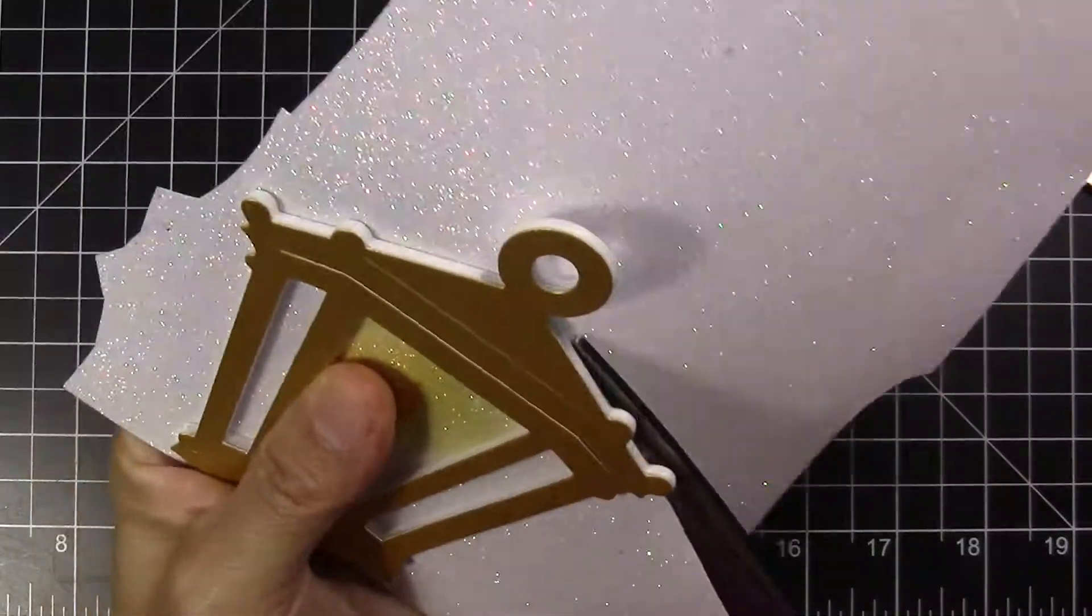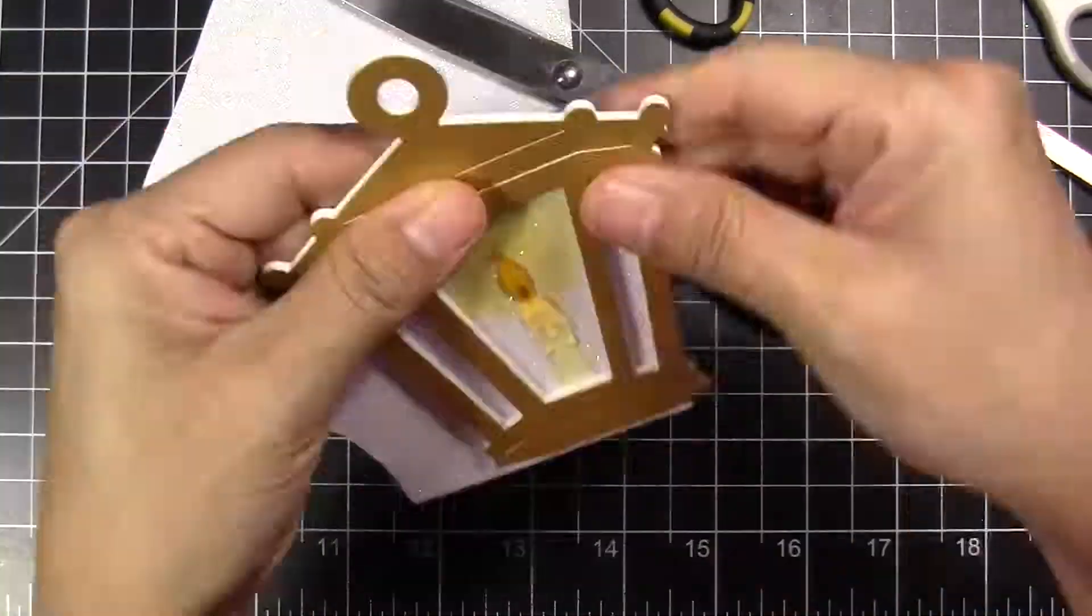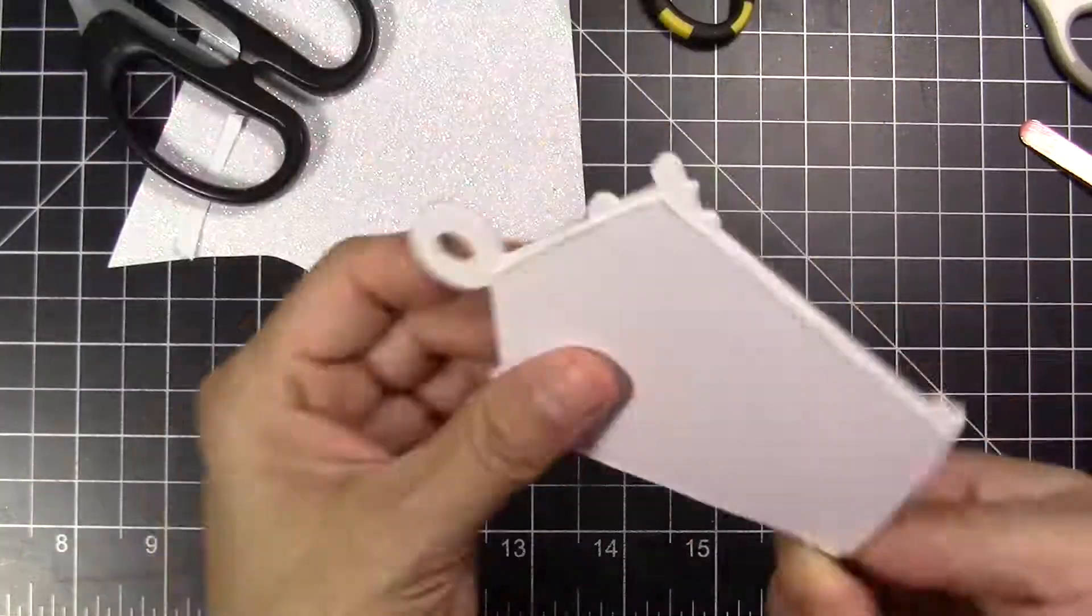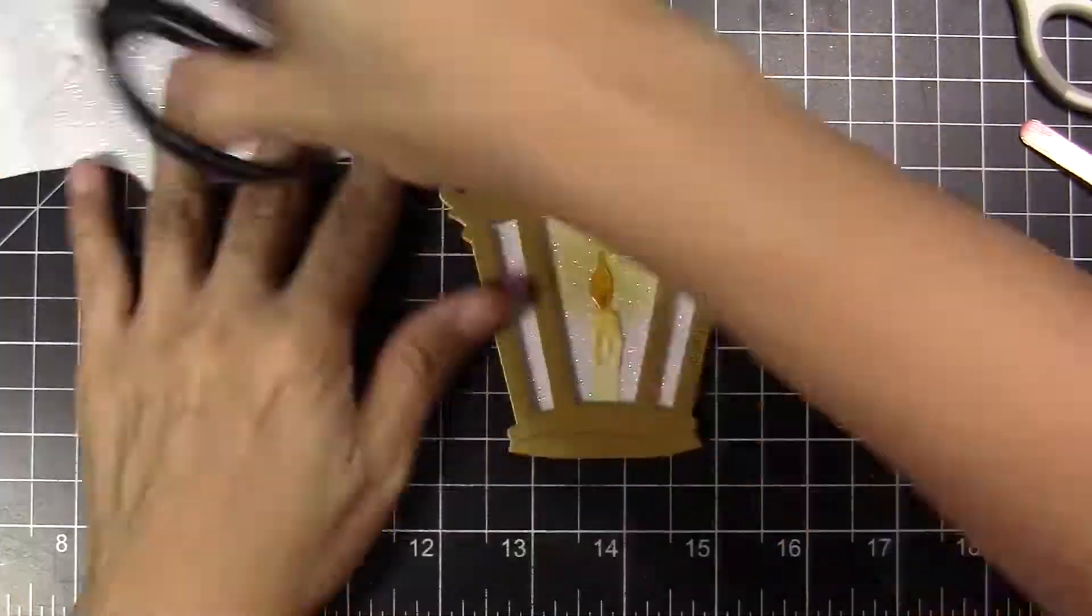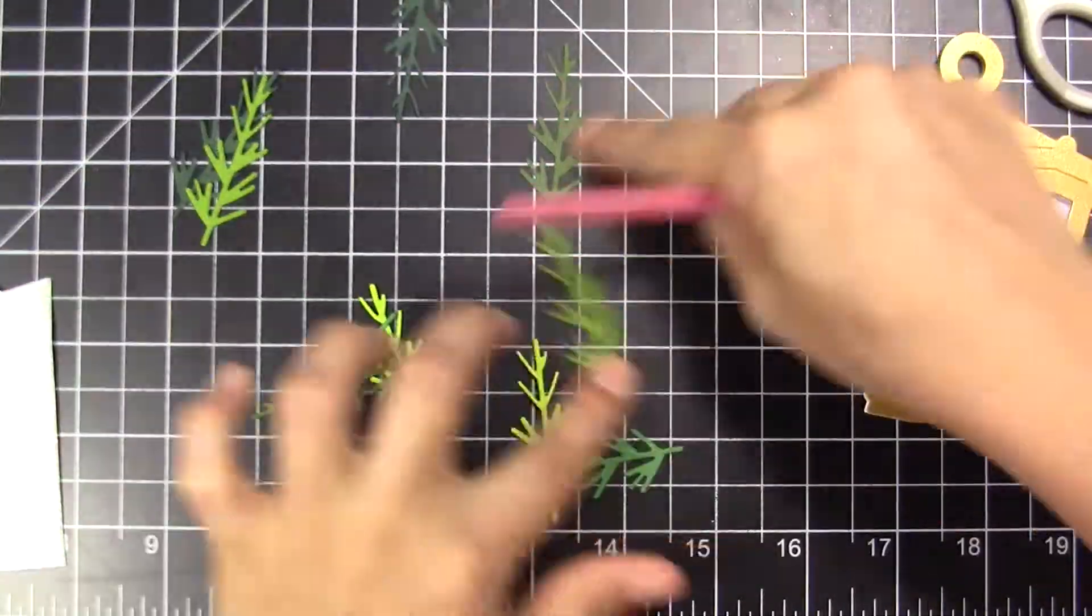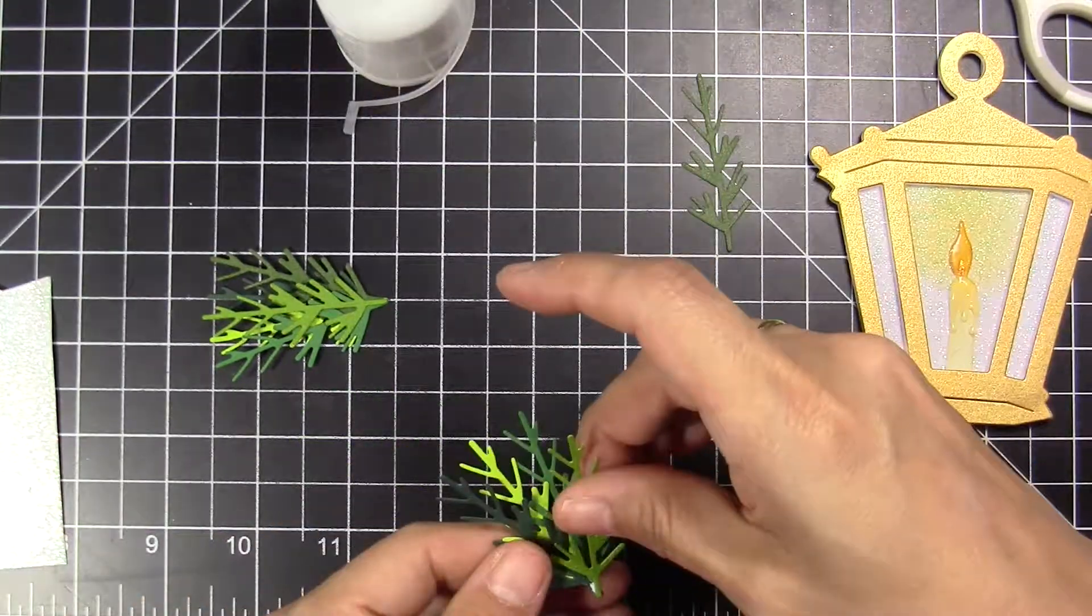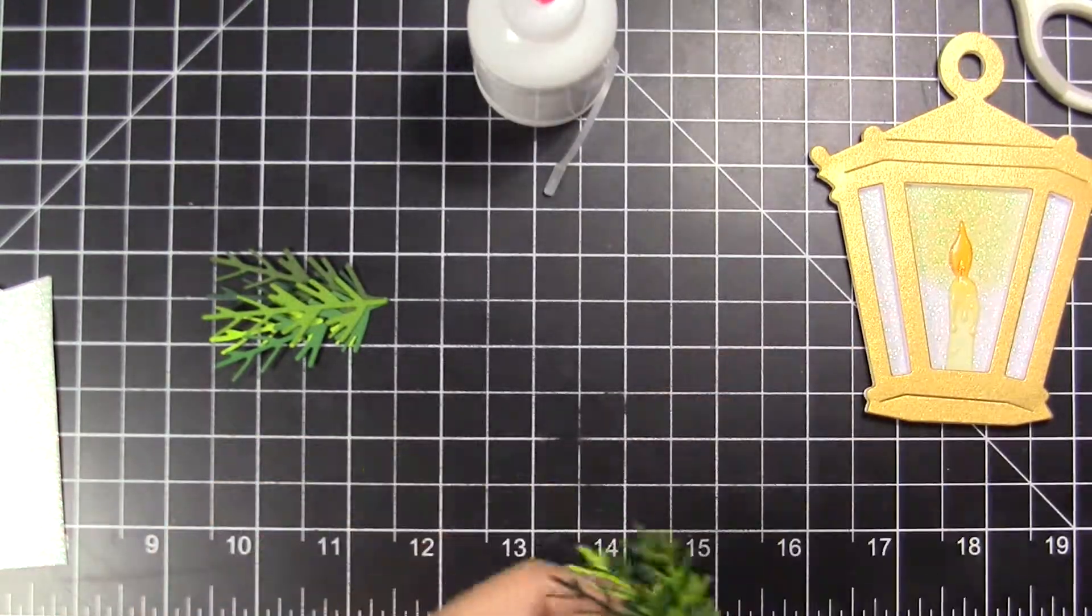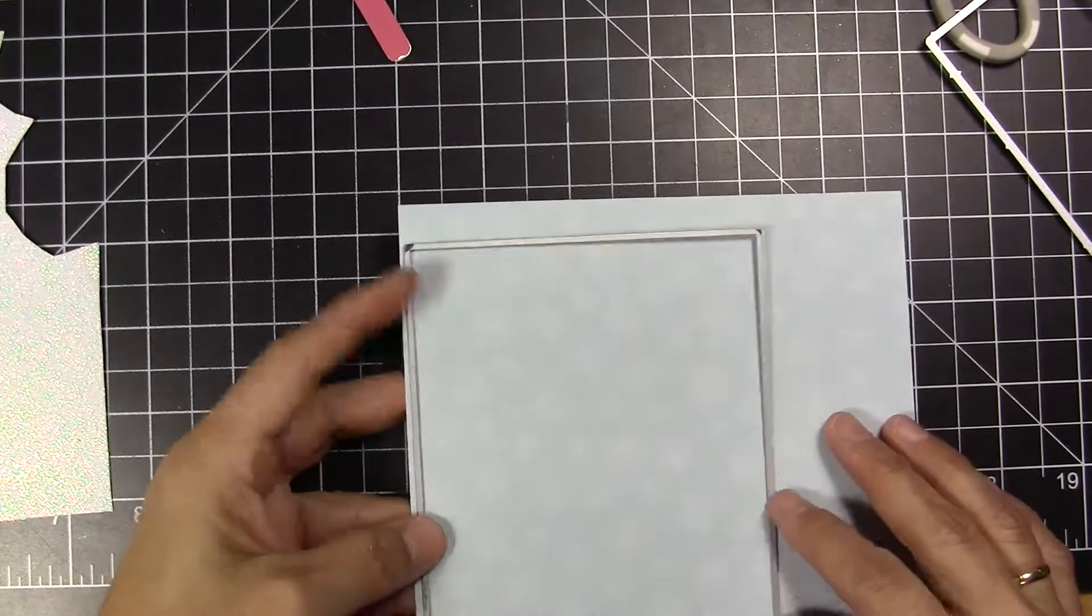After I glue my lamp and press it very well, I'm just going to cut the rest of the paper that is hanging out of the lamp. As you see, I didn't glue anything on the top of the lamp, on the hanger of the lamp, because I plan to add Baker's twine in white and red in there. I cut several pieces in different greens of these evergreen or pine pieces and I make a bunch of them together.